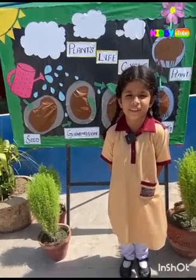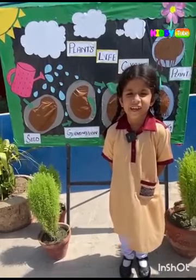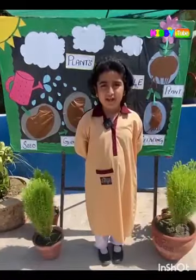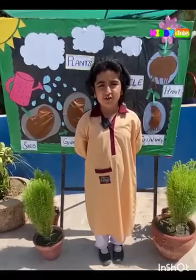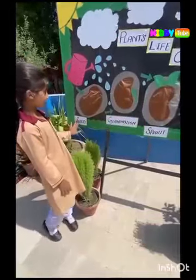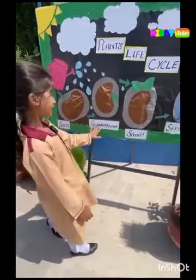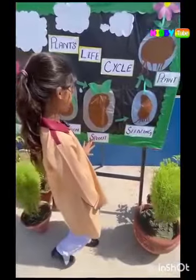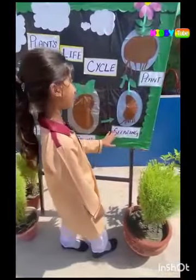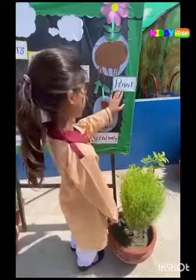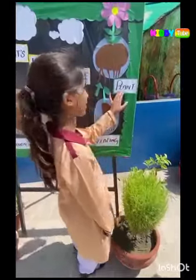There are four main stages in the life cycle of plants. First, seed. Second, germination. And the fourth stage is when the seed becomes a plant.